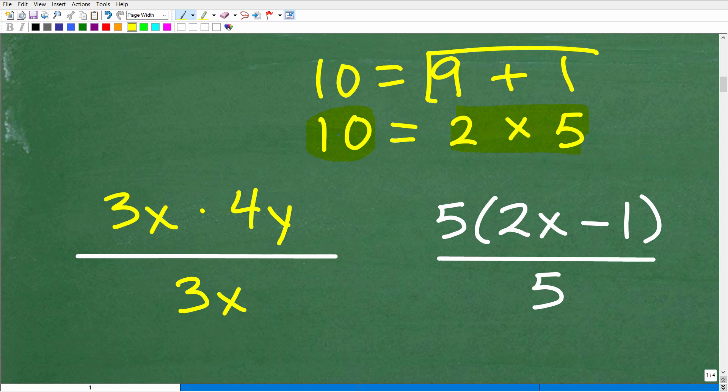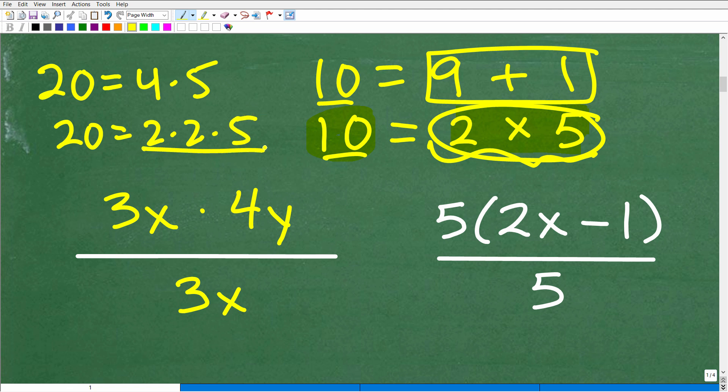Specifically, factors involve multiplication - numbers that are separated by multiplication. So 9 plus 1 is 10, but these are not factors. 9 and 1 are not factors of 10. You don't think of numbers being separated by addition or subtraction as factors. You can only cross cancel like factors - things that are separated by multiplication. Like 20 can be 4 times 5, so factors of 20 are 4 and 5. But factors of 20 are also 2 times 2 times 5.